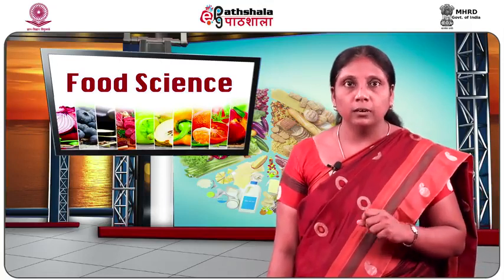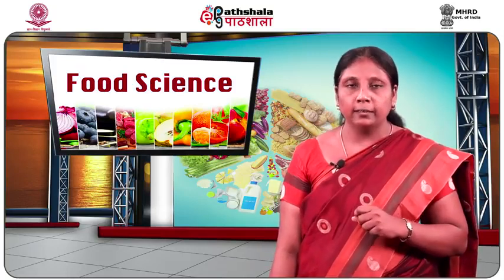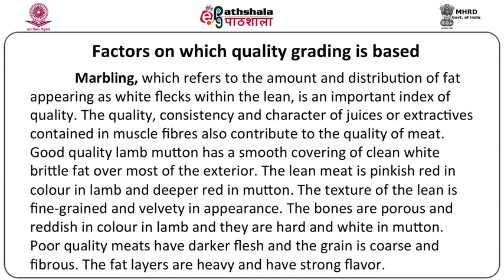The maturity of the animal affects the texture, firmness and colour of the meat. Marbling, which refers to the amount and distribution of fat appearing as white flecks within the lean muscle mass, is an important indicator of quality. The quality and character of juices contained in the muscle fibres also contribute to the quality of meat. Good quality lamb and mutton has a smooth covering of clean white brittle fat. The lean meat is pinkish red in lamb and deeper red in mutton, fine grained and velvety. The bones are porous and reddish in lamb but hard and white in mutton. Poor quality meats have darker flesh with coarse, fibrous grain, heavy fat layers, and a strong flavour.